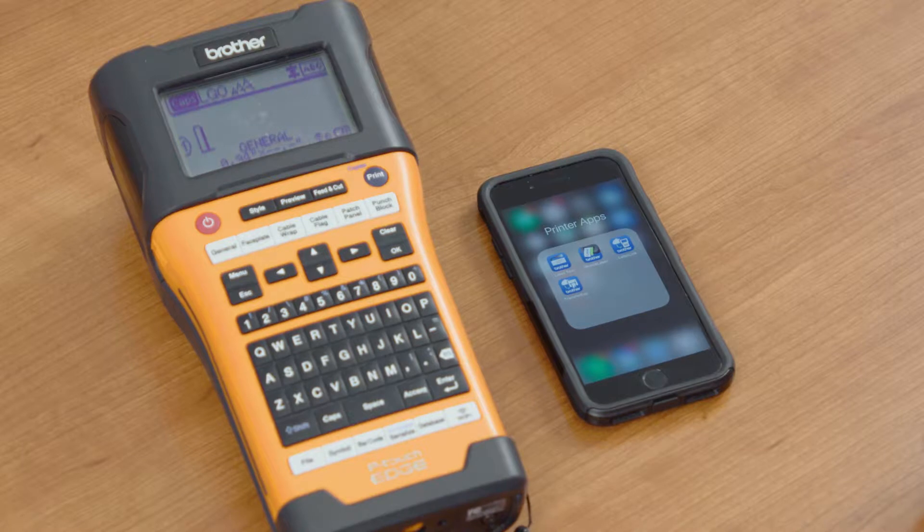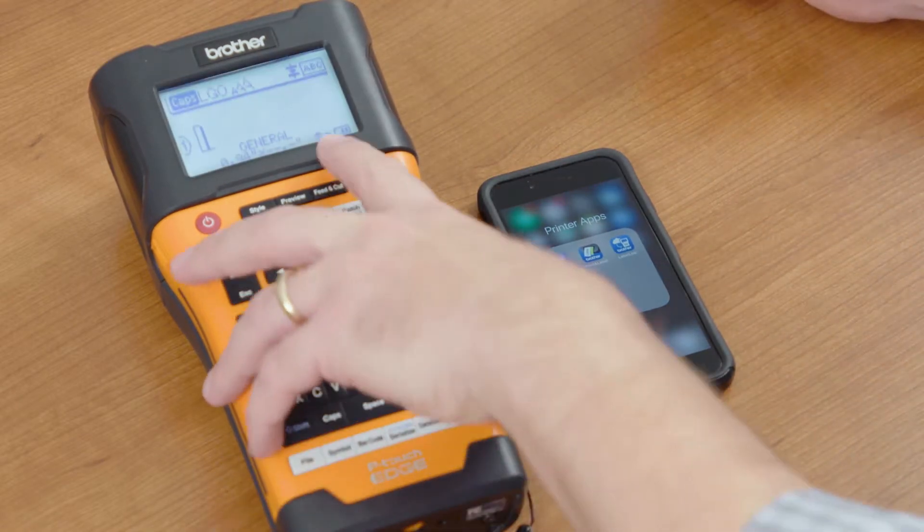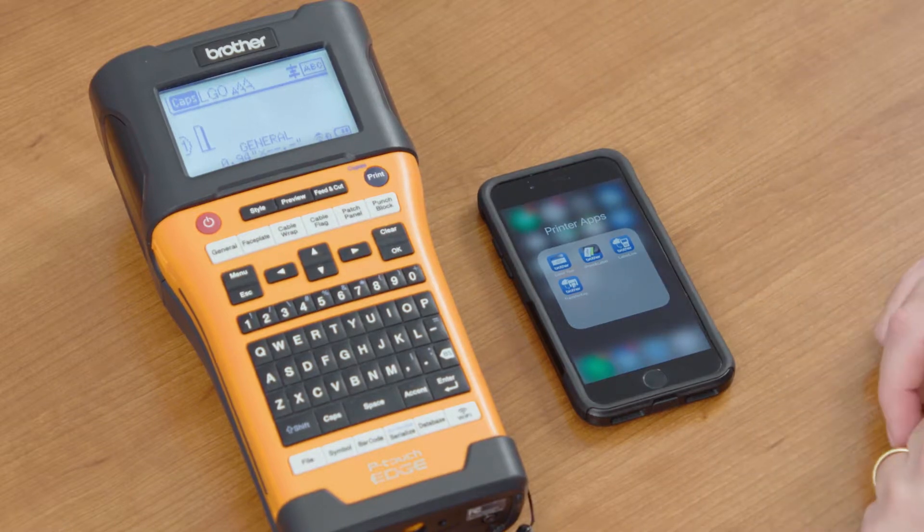Using the Transfer Express mobile app with PTE 550W is very simple to do. Make sure you have your Wi-Fi being transmitted from the machine and you're connected to the device.